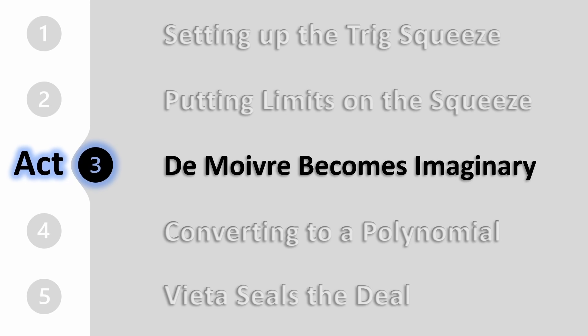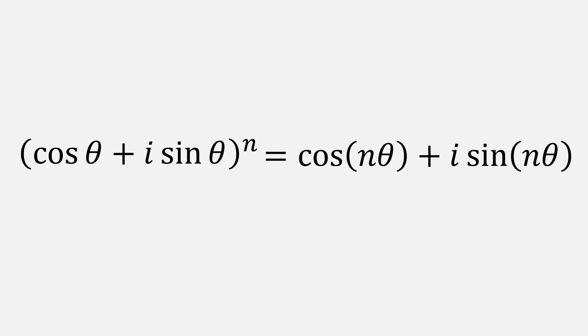For our third act, we're going to start from a clean slate, applying de Moivre's theorem. According to de Moivre's theorem, if we start with a complex number, then when we raise it to the nth power, it simplifies to this. But of course, the reverse is also true.